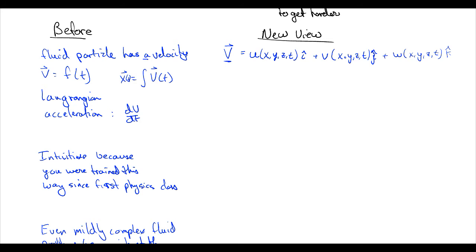What this means is that we could pick a point in space, plug in that point in space, the coordinates x, y, and z, and the time, and we can calculate the x, y, and z component of the velocity there. This is called an Eulerian point of view.